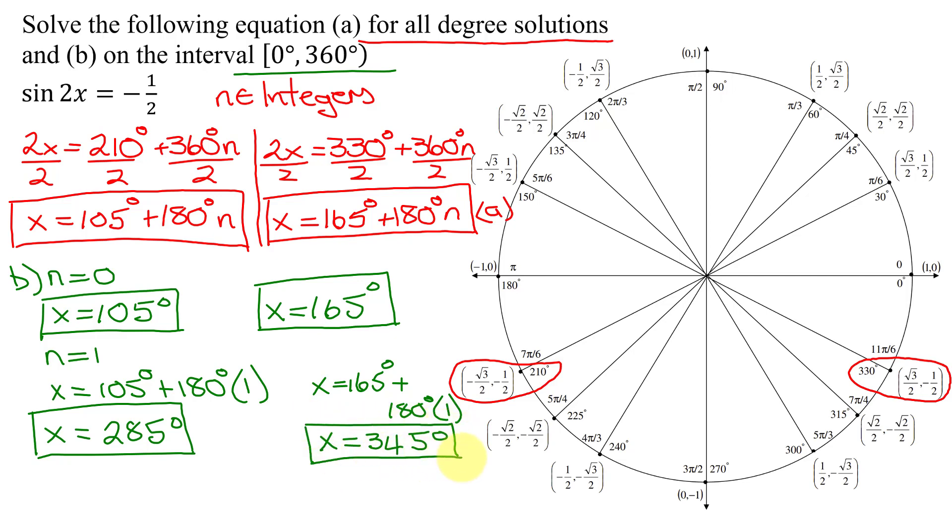Have I found all the solutions? Well, just to check, if you plug in n equals 2 to either of these equations, let's take the first one, I get x equals 105 degrees plus 180 degrees times 2, that's going to be 360. So this answer is going to be bigger than my 360 degrees. So this equation has 1, 2, 3, 4 solutions in the interval 0 to 360 degrees.